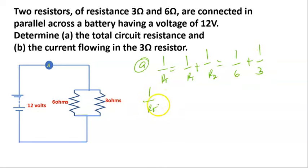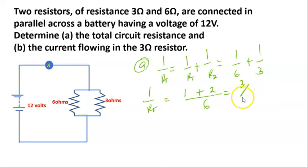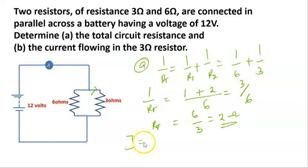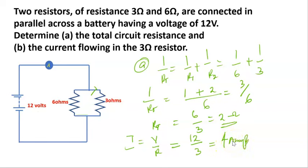Taking the LCM of 6: 1 over RT equals 1 over 6 plus 2 over 6, which equals 3 over 6. Taking the inverse of both sides, RT equals 6 over 3, which equals 2 ohms. So the total resistance for this circuit is 2 ohms. For part (b), the current flowing through the 3-ohm resistor is I equals V over R, which is 12 over 3, equals 4 amps. A current of 4 amps flows through the 3-ohm resistor.